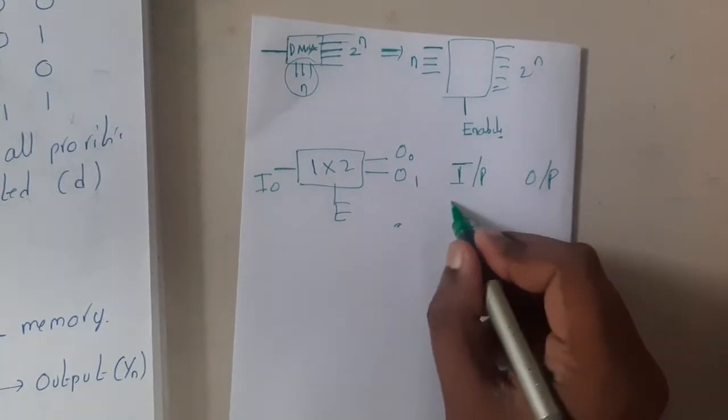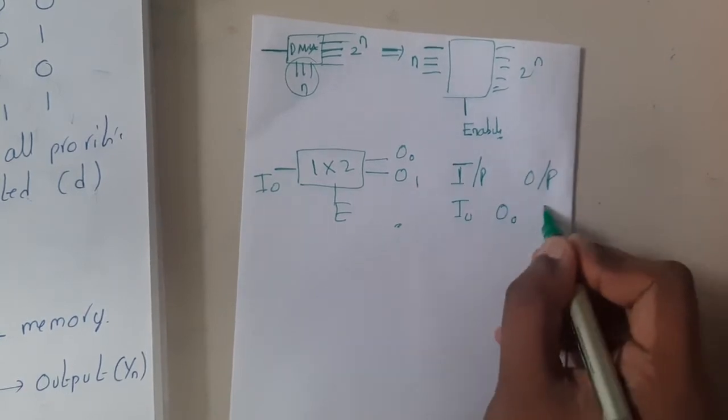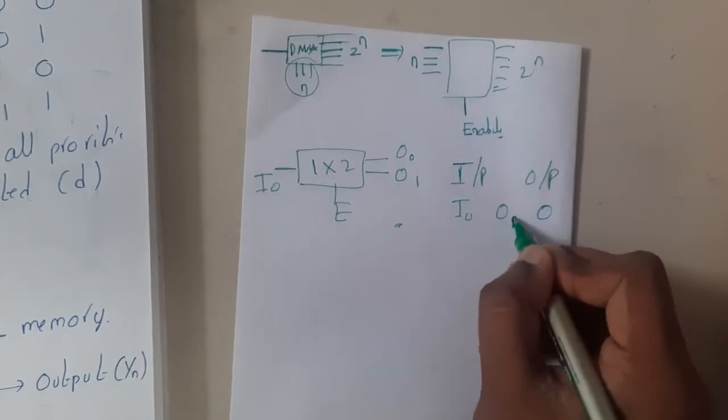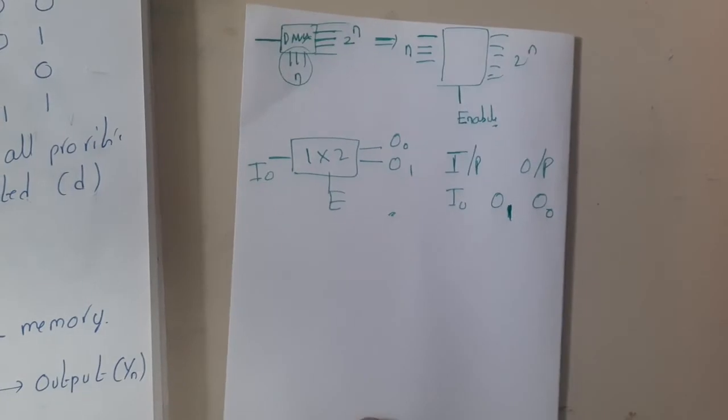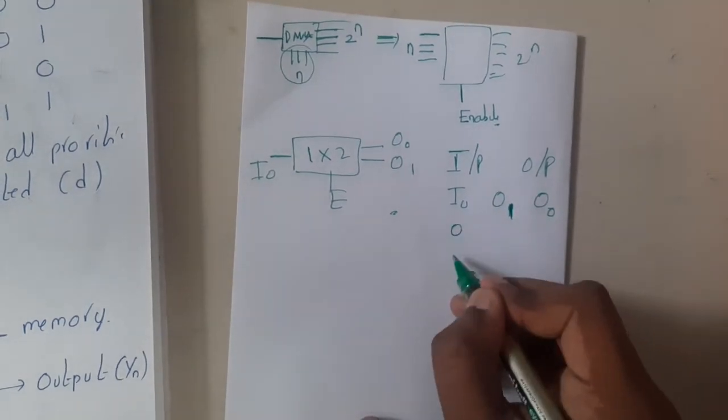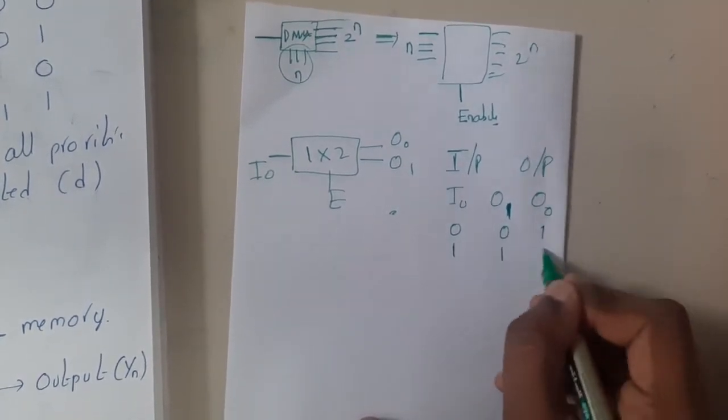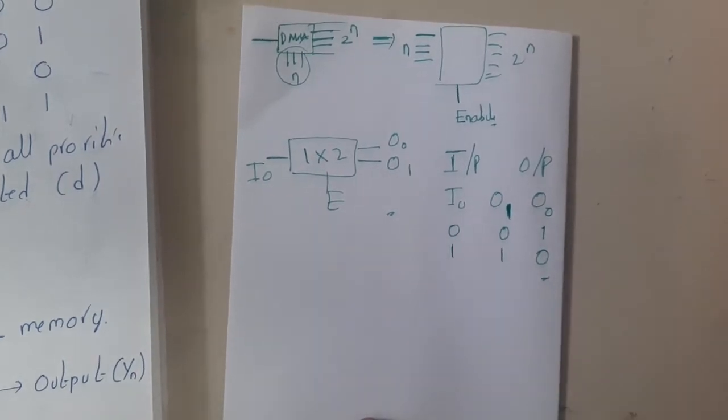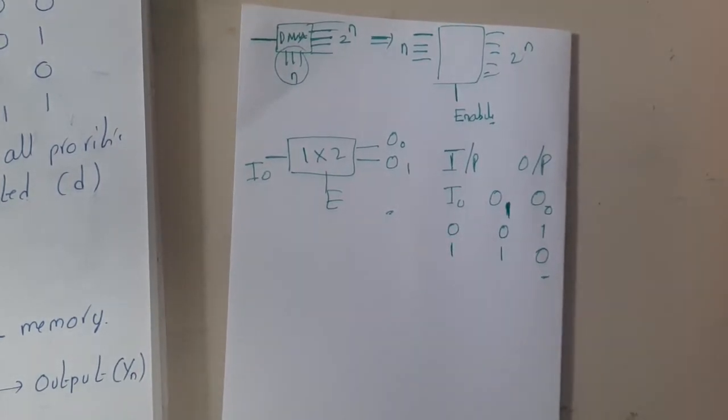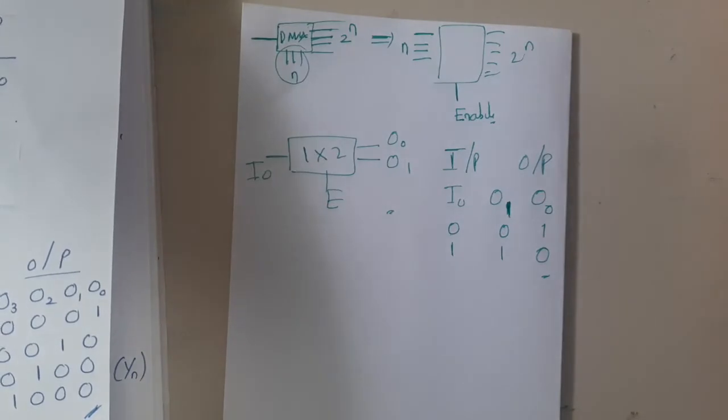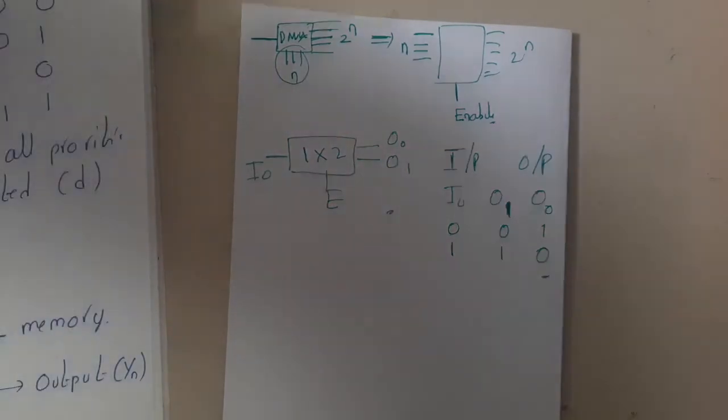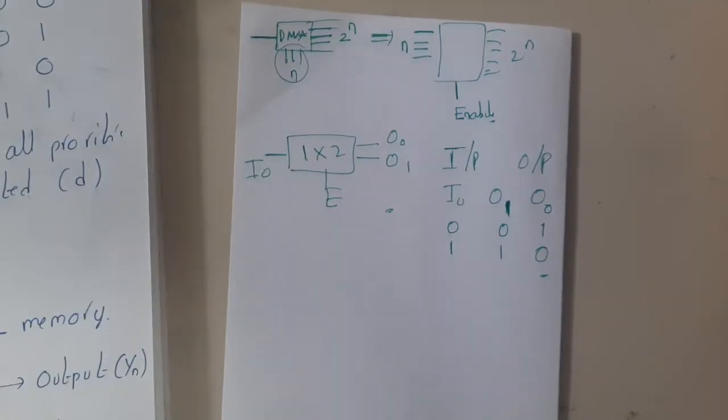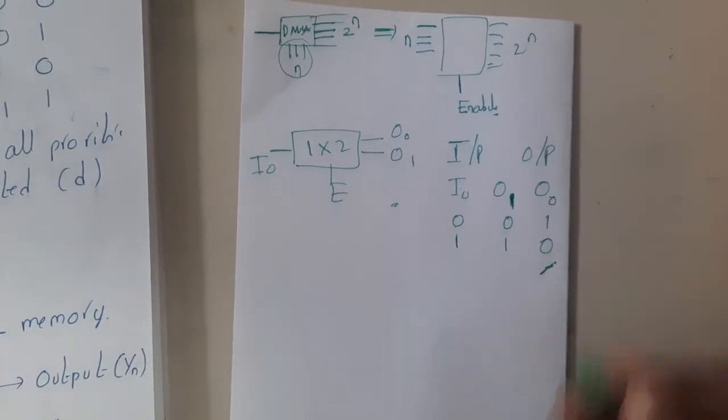I naught, O naught, and O1 in the reverse order, so don't confuse with it. Zero one, zero one, one zero. In this way it will work. It's a quite simple method. This is the representation.